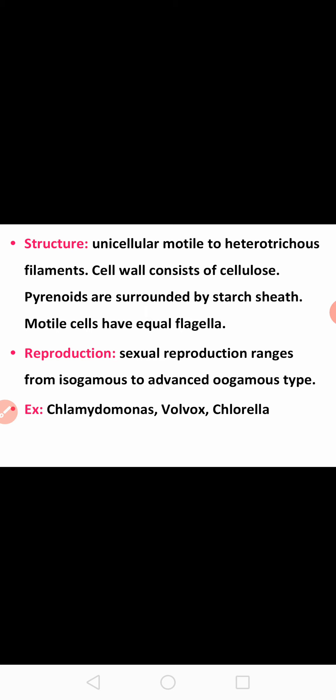Coming to the cell structure, each cell is externally covered by a cell wall composed of cellulose. Internally, next to the cell wall, the cell contains cytoplasm surrounded by the plasma membrane. In the cytoplasm, the cell contains starch storage organs called pyrenoids, which are present in the matrix of the cell.